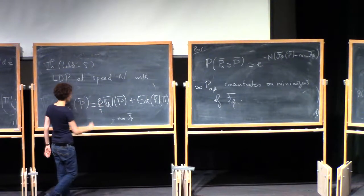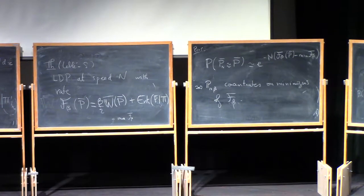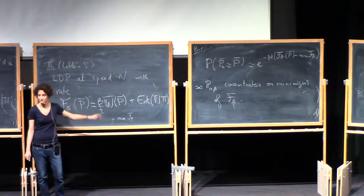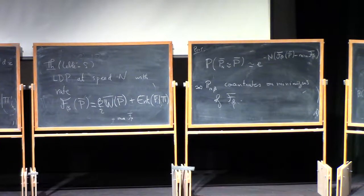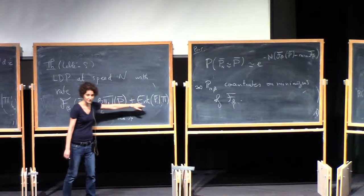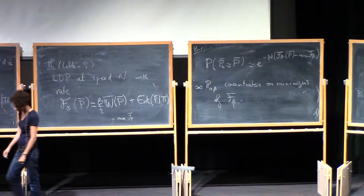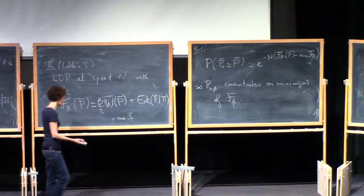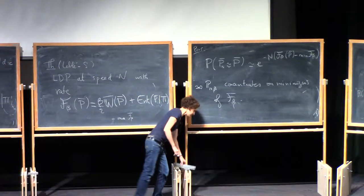You see here the effect of temperature, which is in beta. When beta is very large, temperature is very small — it's W that dominates, and so you want to be quite ordered. When beta is very small, which means temperature is very large, this term disappears and you converge to the Poisson point process. So it fits the intuition: as you have more temperature, you have more disorder; as you have less temperature, you have more order.